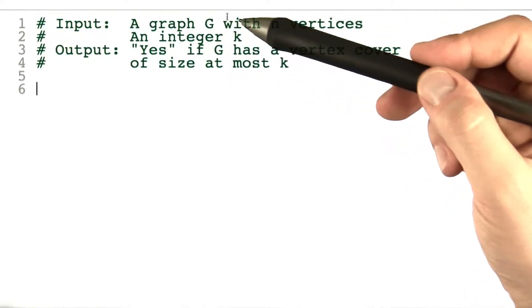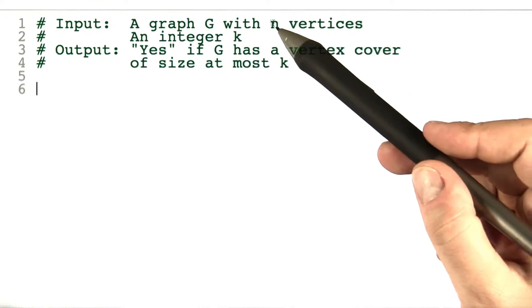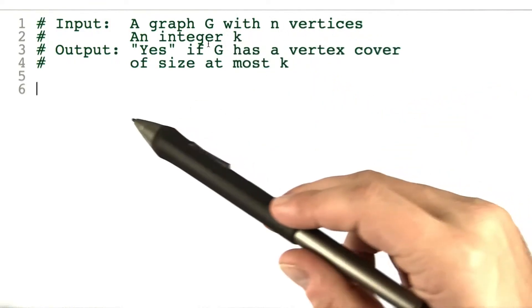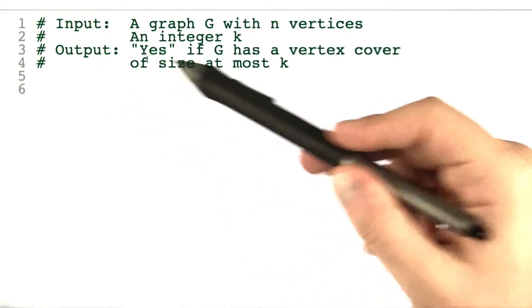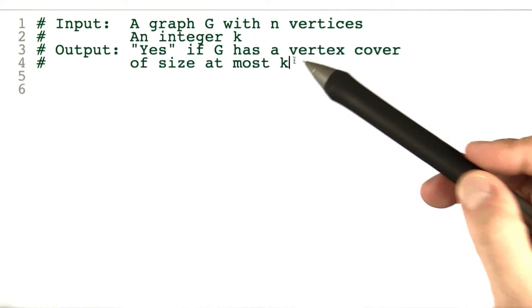We're working with the decision version of vertex cover here. As input, we're given a graph G with n vertices and an integer k. The output is yes if G has a vertex cover of size at most k, and no otherwise.